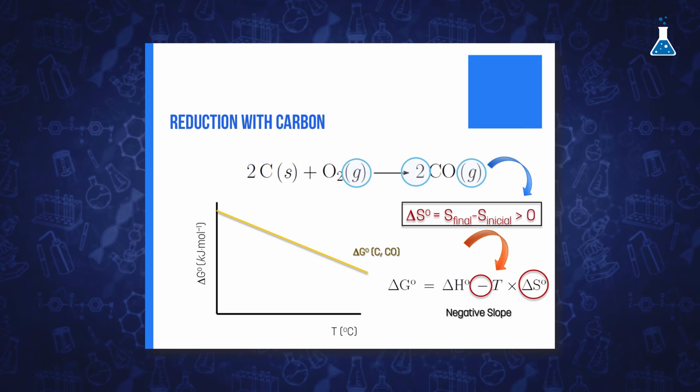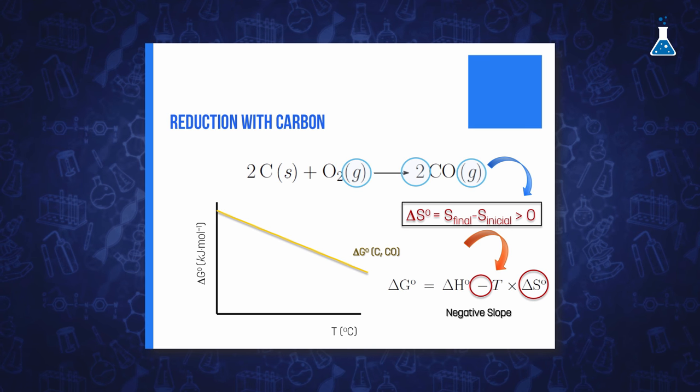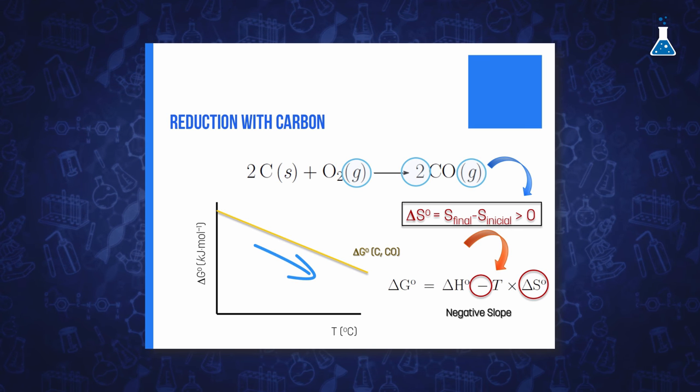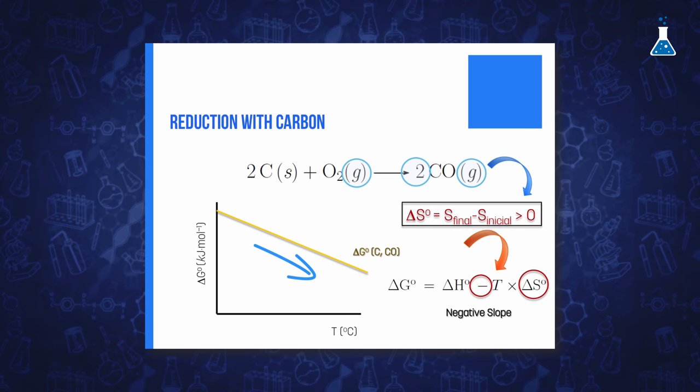The variation of Gibbs energy with the temperature for these three reactions is a relevant aspect to consider in order to understand the process of reduction of a metal oxide with carbon or carbon monoxide. In the case of oxidation of carbon to carbon monoxide, the line slopes downwards because two moles of carbon monoxide are produced for each one mole of oxygen gas used. That means that the entropy change will be positive and the slope negative.